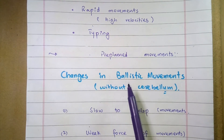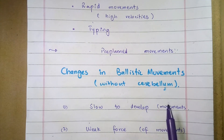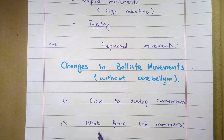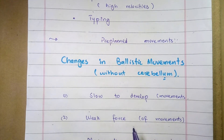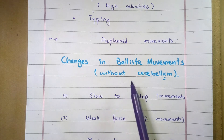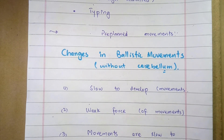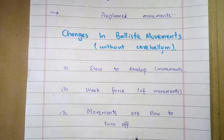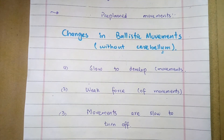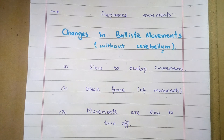When the cerebellum is absent, there is slow development of ballistic movements. Number two: the force developed is weak — the force of ballistic movements is weak without the cerebellum. Number three: the movements are slow to turn off, usually allowing the movements to go well beyond the intended mark.